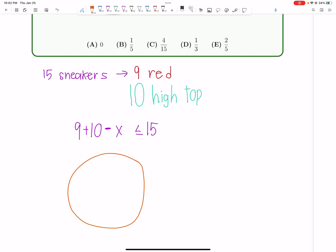Let's imagine we got red here. Red, high-top. We know that in total, there's going to be 15 total shoes. We know nine fall into this circle, and we know 10 fall into the high-top circle.